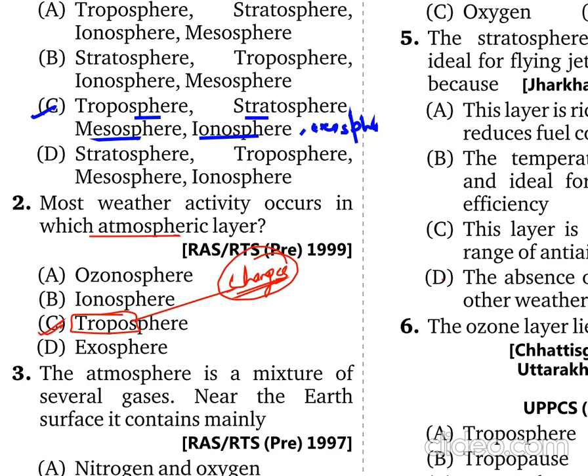The Troposphere is about 13 km thick on average — around 8 km over the poles and 18 km over the equator.